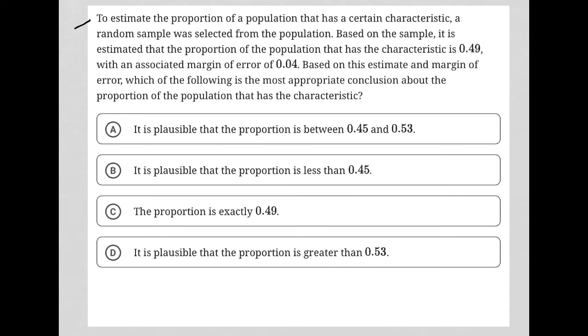So this question says, to estimate the proportion of a population that has a certain characteristic, a random sample was selected from the population. Based on the sample, it is estimated that the proportion of the population that has the characteristic is 0.49. So that will be important. I'm going to just box it with an associated margin of error of 0.04. So first of all, what does all this mean?